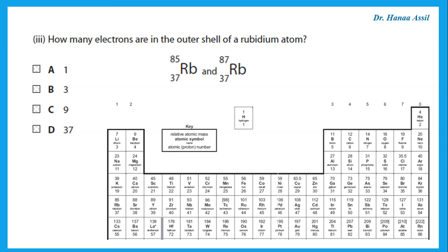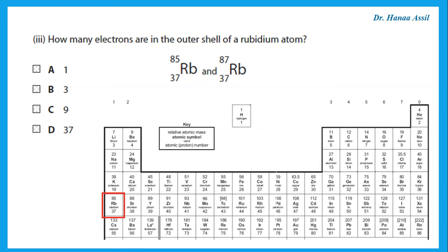How many electrons are in the outer shell of a rubidium atom? If you look at the periodic table, rubidium is in group one. Remember, anything in group one has one electron in the outer shell.